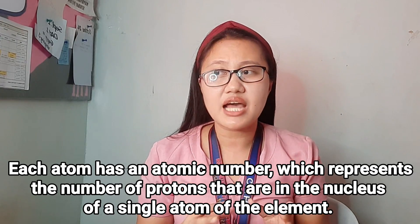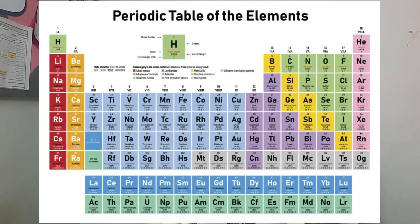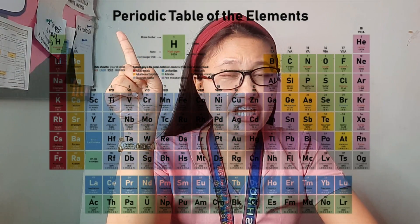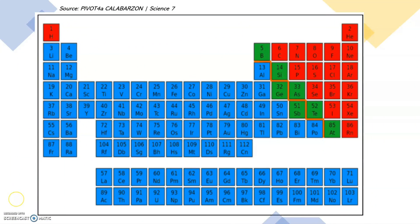Each atom has a corresponding atomic number, which you can see in the periodic table. Every element has its own atomic number, which represents the number of protons in the nucleus of a single atom. If you notice in the periodic table of elements, it is arranged in ascending atomic number — from hydrogen, helium, lithium, beryllium, and so on.